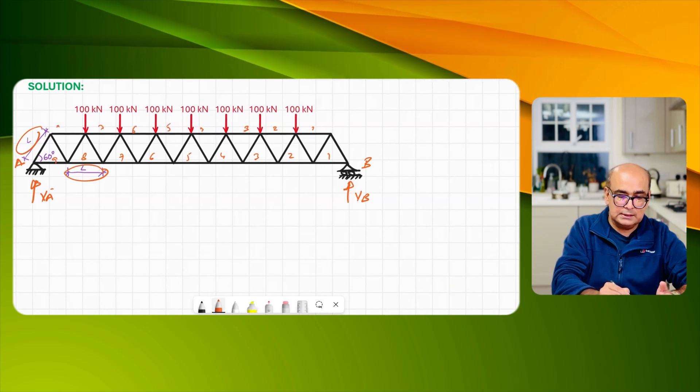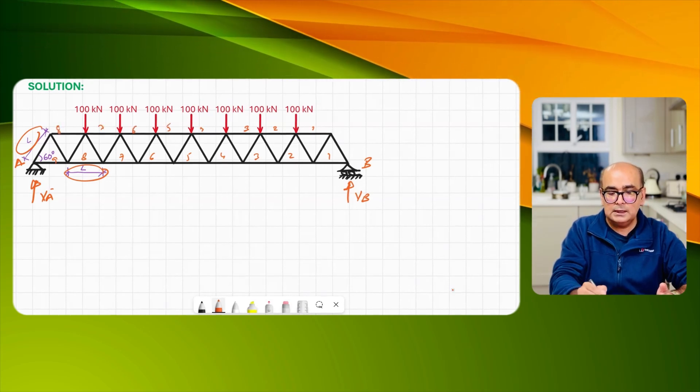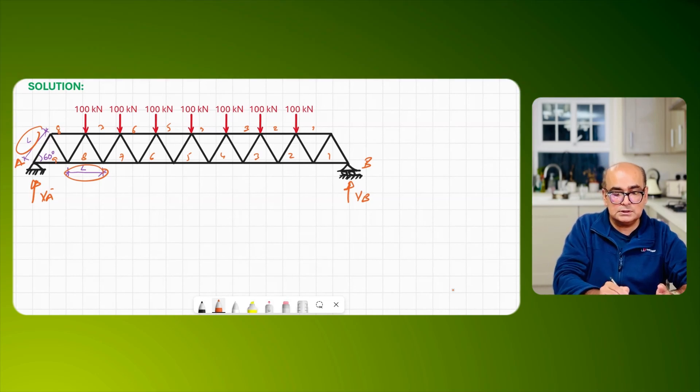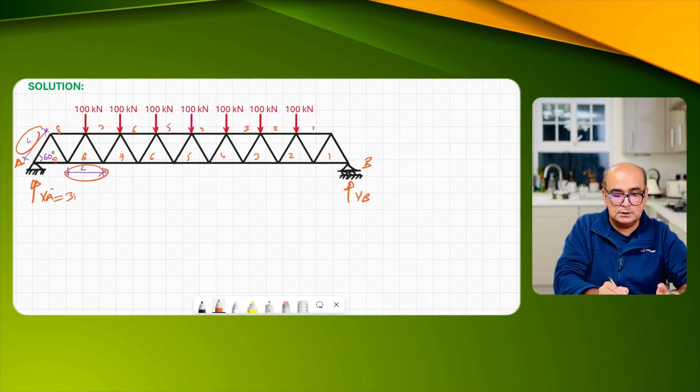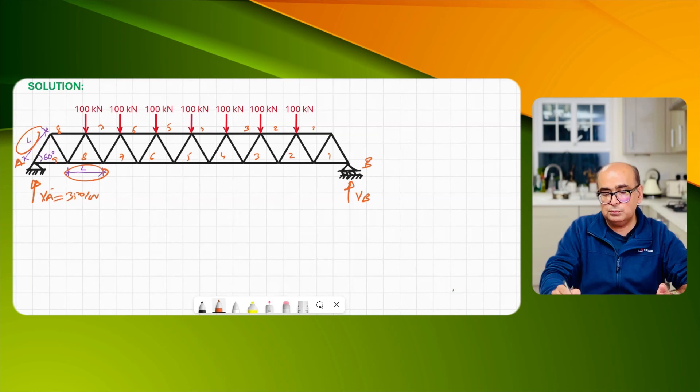At the top I have I think eight panels, one, two, three, four, five, six, seven, eight. At seven points I have this load so 700 kilonewton, 7×100 divided by 2 is 350 kilonewton. So both sides I have reactions as 350 kilonewton.